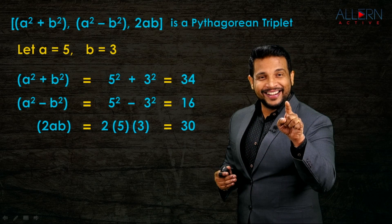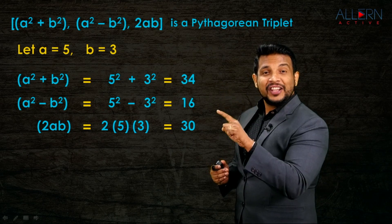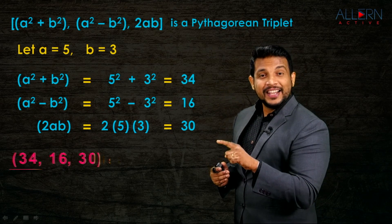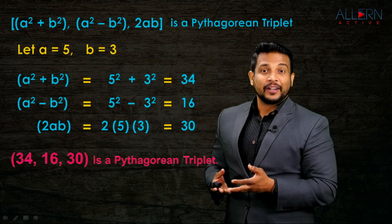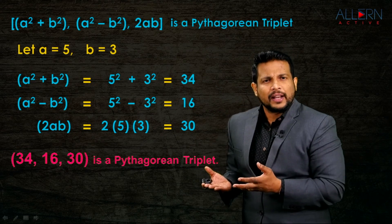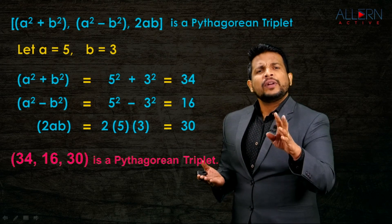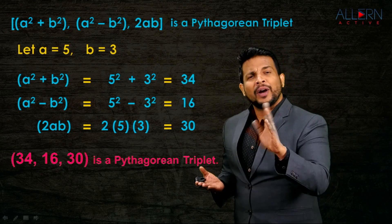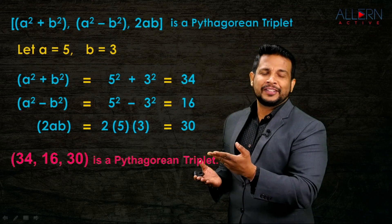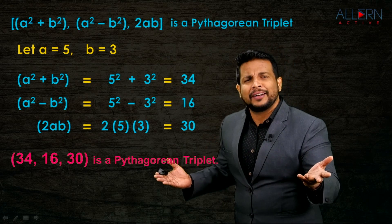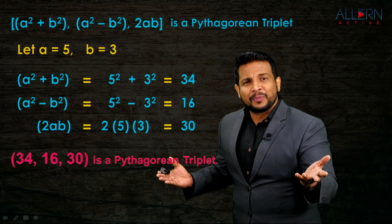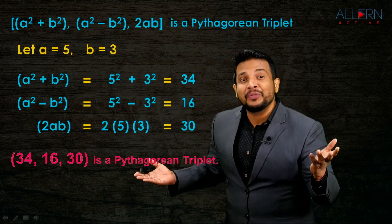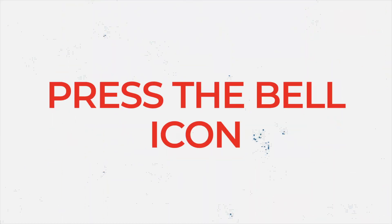That means 34, 16, 30 is a Pythagorean triplet. You can create a Pythagorean triplet like this: take any two natural numbers where one is greater than the other, apply this formula, and you can create as many Pythagorean triplets as possible. Please do not forget to like, share, subscribe and press the bell icon.